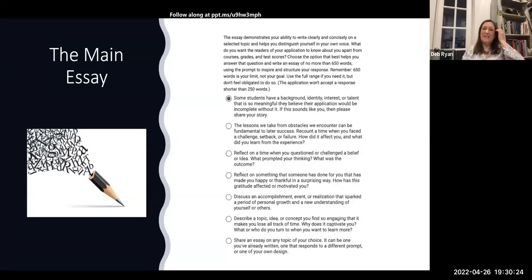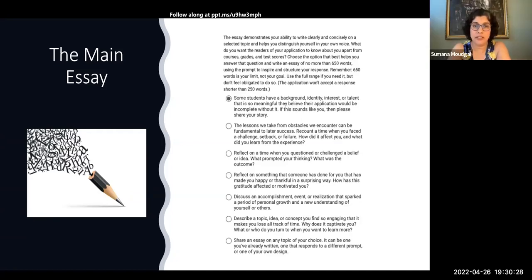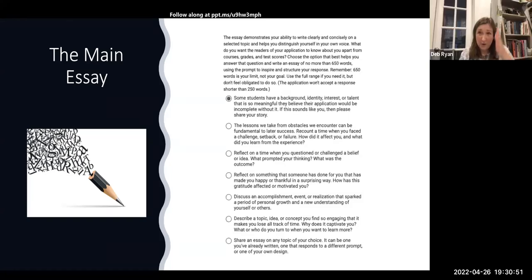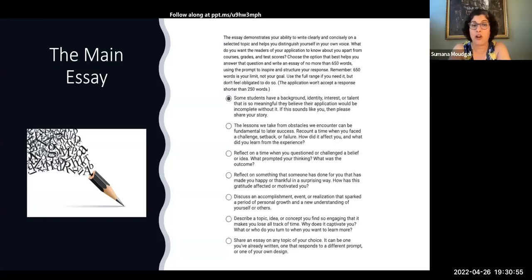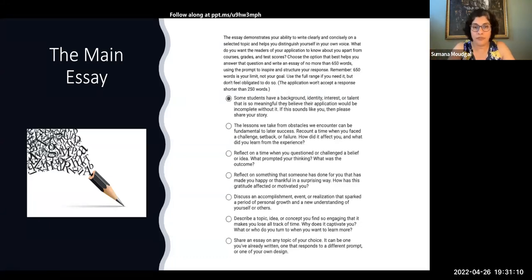On the Common App, there are seven essay prompts. You have to pick one and write one essay of 650 words — when they say 650 words, it isn't a suggestion. You really do need to limit it to 650 words; you can drop below 650 but cannot go one word above. Your response also cannot be shorter than 250 words. Each prompt kind of showcases a different side of you — as students look through the various prompts, they'll see that each one speaks to a different aspect of who you are.